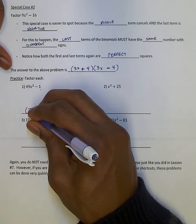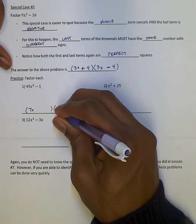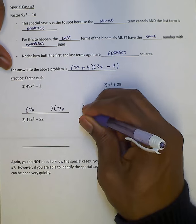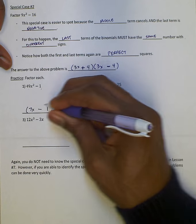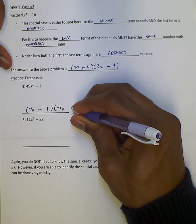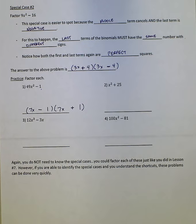So I have 7x, square root of 49x squared, and 1, which is the square root of 1. No middle term, so I know they cancel out.